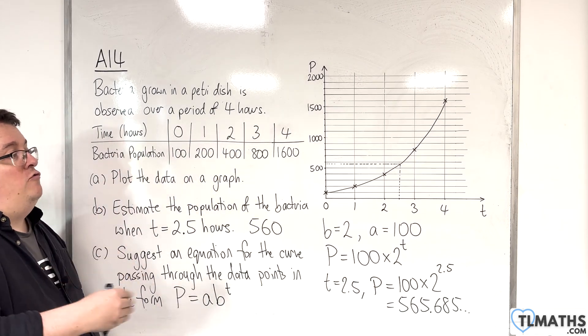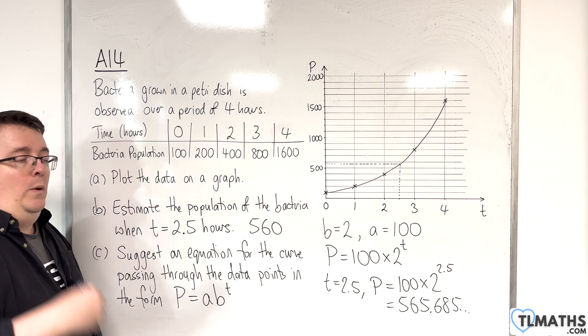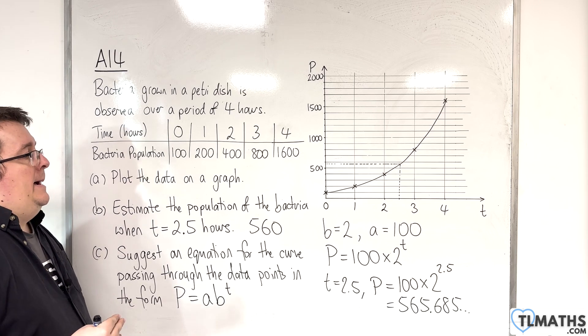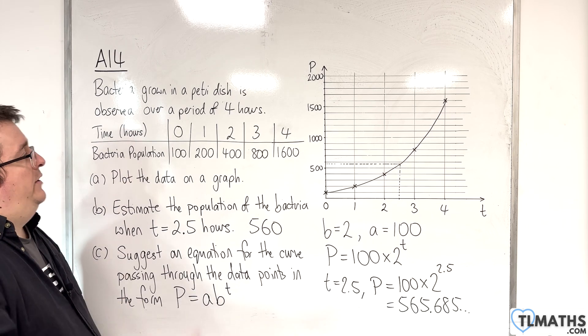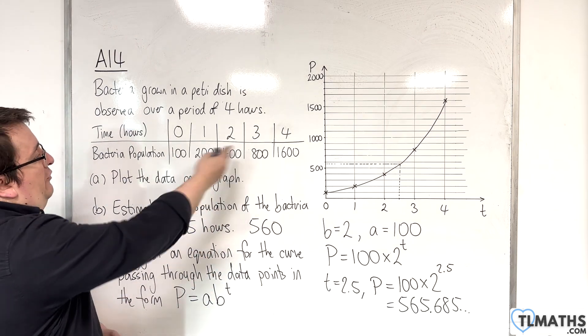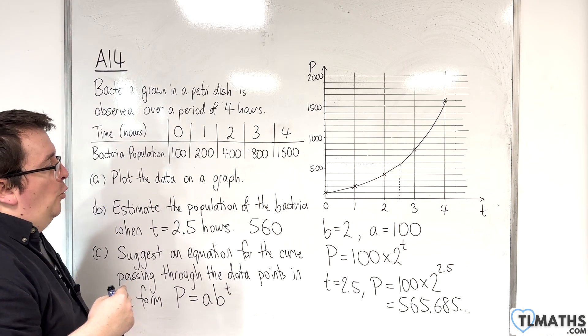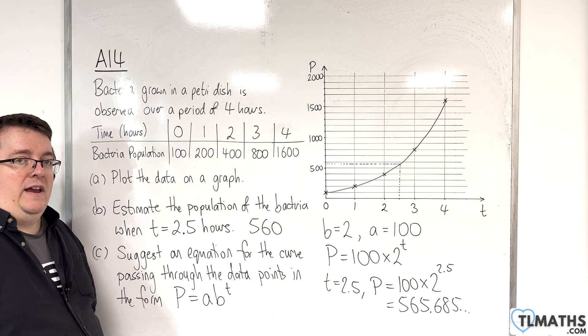As I said, in general, finding that equation can be quite tough. If you were asked to find it, the values would have to be nice in order for you to be able to work out the value of A and B.